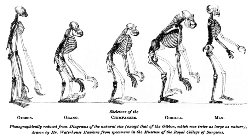Selection occurs when organisms with greater fitness, i.e. greater ability to survive or reproduce, are favoured in subsequent generations, thereby increasing the instance of underlying genetic variants in a population. Selection can be the product of natural selection, artificial selection, or sexual selection. Natural selection is any selective process that occurs due to the fitness of an organism to its environment.